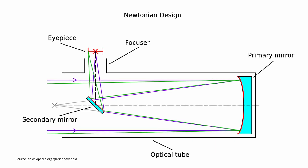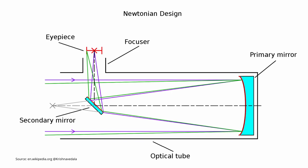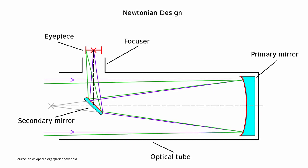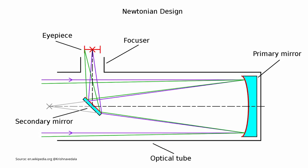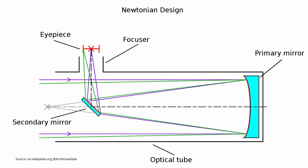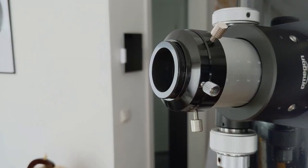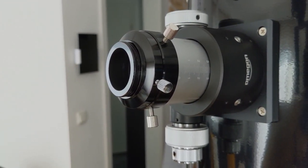The Newtonian telescope works by gathering light that enters the telescope, which gets reflected by the primary parabolic mirror at the far end of the optical tube. The light then reflects back towards the secondary mirror near the front of the tube, which is much smaller than the primary. Because the secondary mirror is tilted at 45 degrees, the light gets reflected towards an opening on the side of the optical tube where the focuser lies. Focusing is done by slowly moving the focuser in and out, adjusting the distance the light travels before reaching your eye.